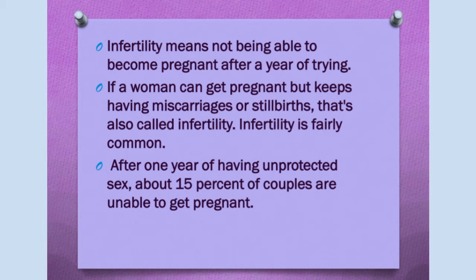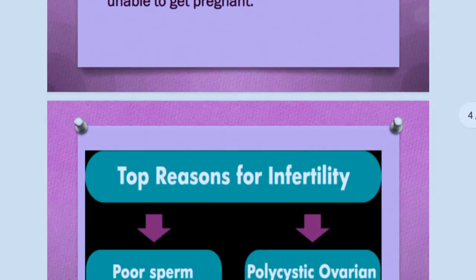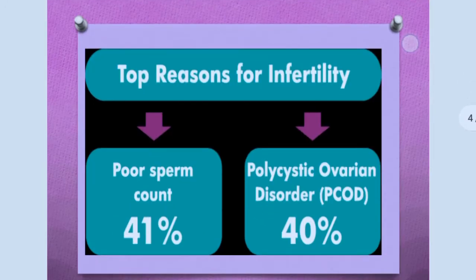The reasons for infertility could be many: physical, congenital, diseases, drugs, immunological, or even psychological. The top reasons are poor sperm count in men and polycystic ovarian disorder in women. Around 41% of causes for infertility are due to poor sperm count, while around 40% are due to polycystic ovarian disorder (PCOD) in women.